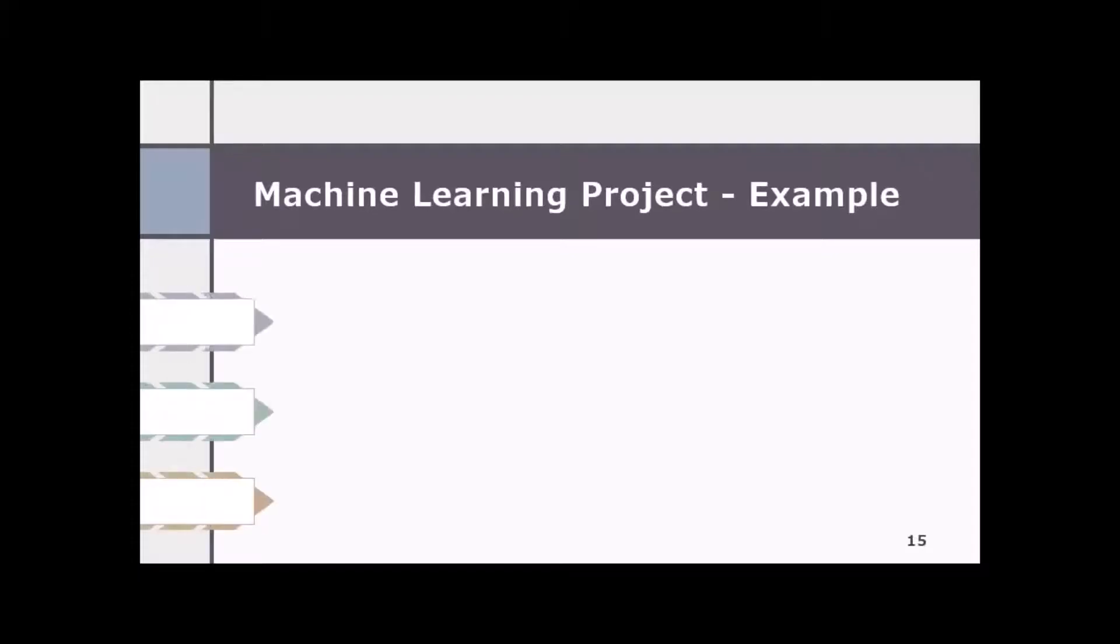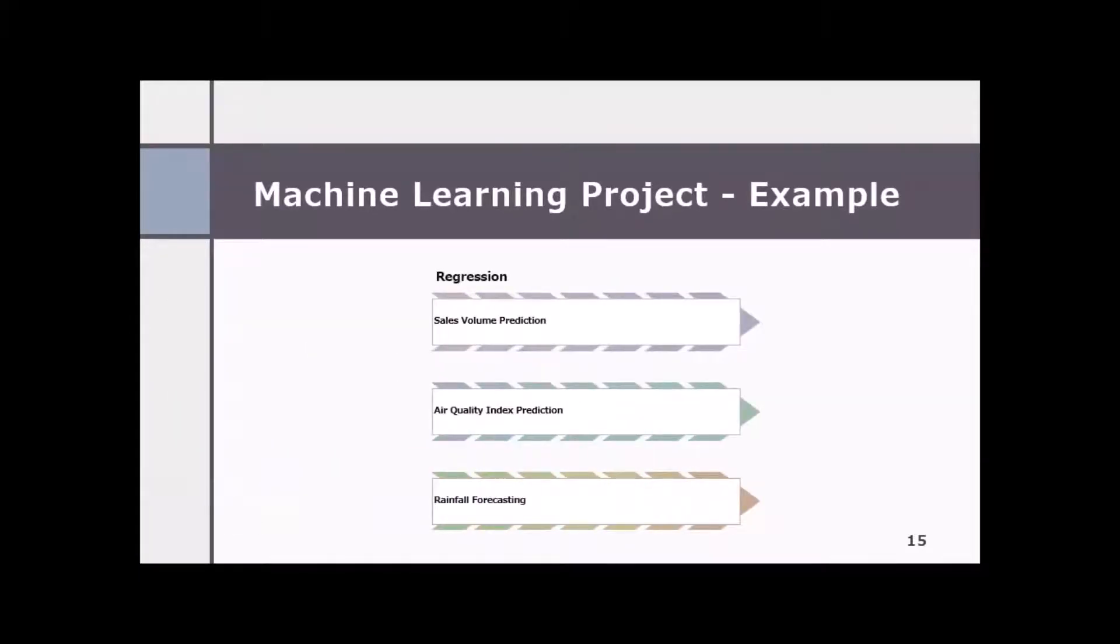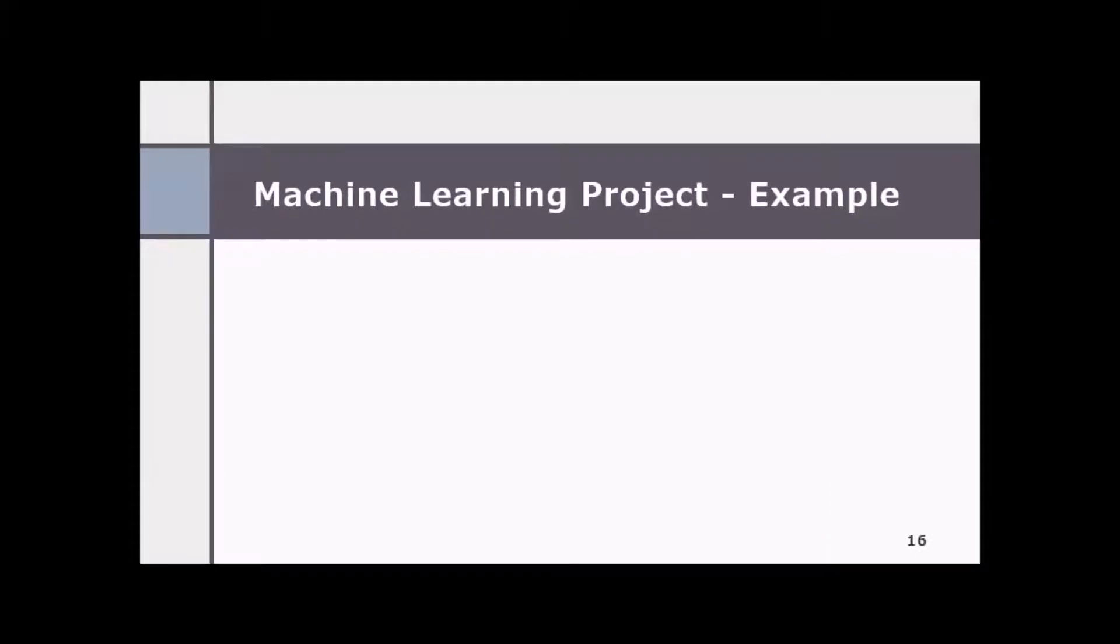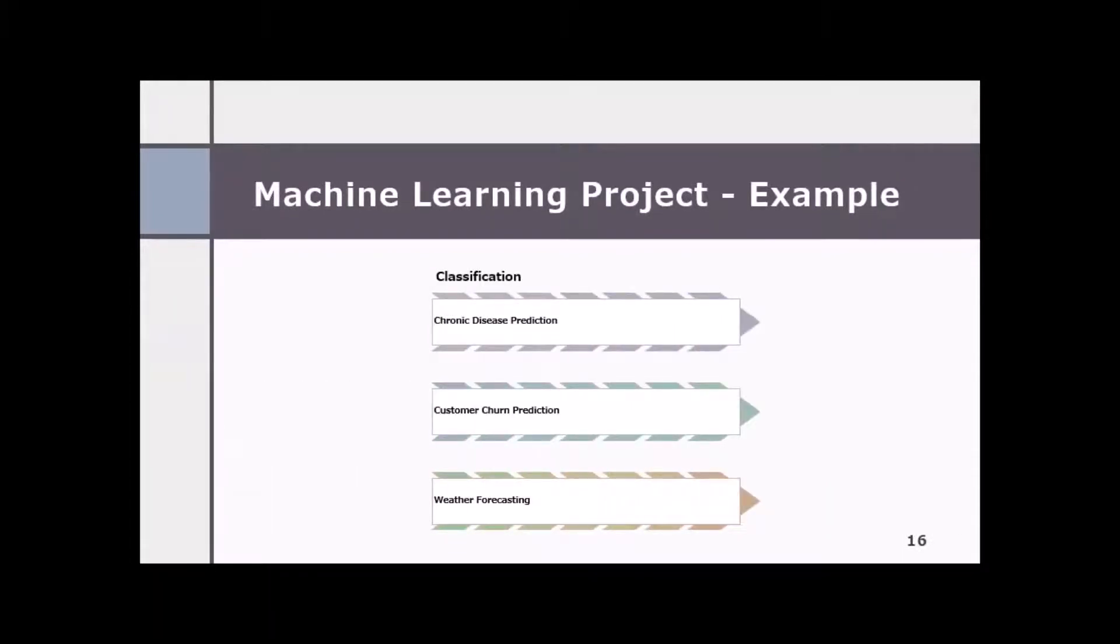Let's look at a few examples for machine learning project type. Regression project which is like sales volume prediction project to predict the air quality index, or rainfall forecasting. In classification, it can be a chronic disease prediction project, customer churn prediction, or weather forecasting. It's sunny, rainy, cloudy, etc. Clustering project example can be fraud detection in financial transaction, segmentation of customer behavior, or recommendation on product purchase.